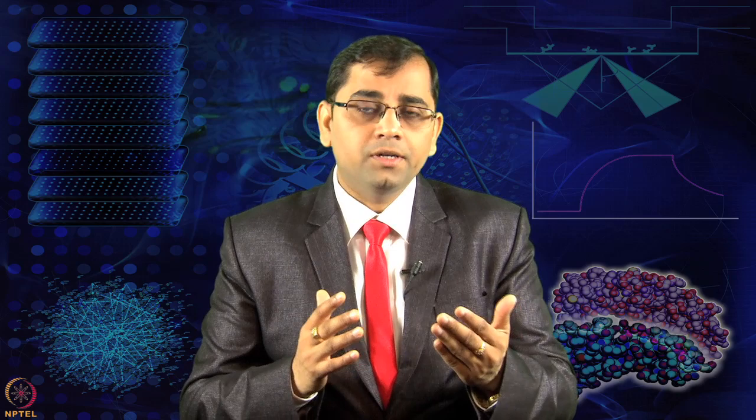The overall gene count was around 20,000 to 30,000 across different model organisms including humans. So what makes humans different? What gives different organisms their unique ability to cope with the environment and specific physiological context? That is where the whole field shifted towards more functional molecules — more towards transcriptomics and proteomics.